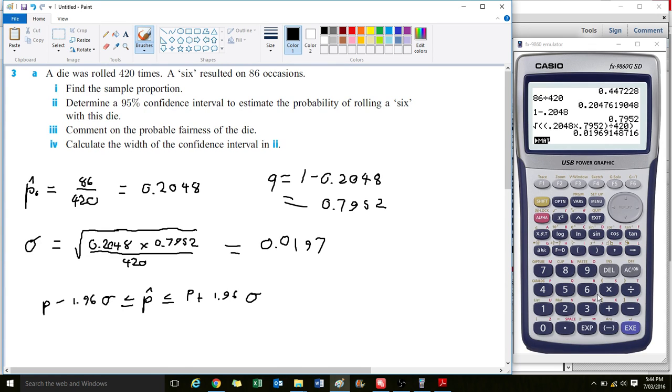Let's calculate: 0.2048 minus 1.96 times our sigma, which is 0.0197.